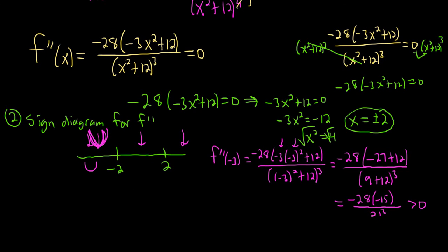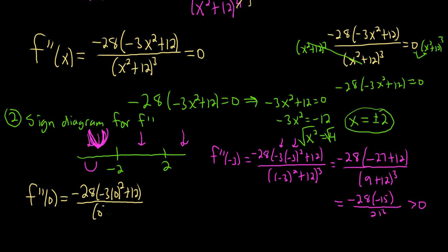How about a number between negative 2 and 2? Let's try 0. f double prime of 0: negative 28 times (negative 3 times 0 squared plus 12), all over (0 squared plus 12) cubed. That's negative 28 times 12, over 12 cubed. That's negative, so here it's concave down.